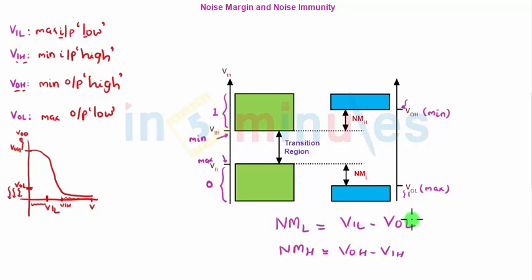Now let's quickly understand whether noise margin should be high or low. If my input is in this range, where this is a maximum interpreted as 0 and this is a minimum interpreted as 1, what will my value be interpreted as if it's in between? It's an indeterminate zone. If you have a larger indeterminate zone, your circuit does not know what to interpret the input as, and you will get a corrupted output.